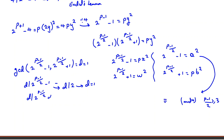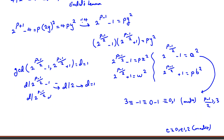The right-hand side, being a perfect square a², is 0 or 1 mod 4. For any integer t, t ≡ 0, ±1, or 2 mod 4, and t² ≡ 0 or 1 mod 4. The left-hand side 2^((p-1)/2) - 1, where the exponent is at least 3, is 0 - 1 ≡ 3 mod 4. Since 3 is neither 0 nor 1, we reach a contradiction. So Case 1 is impossible.